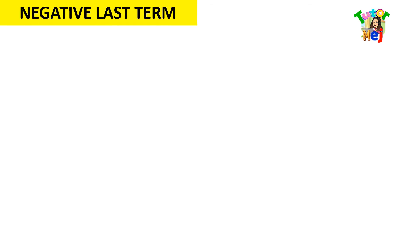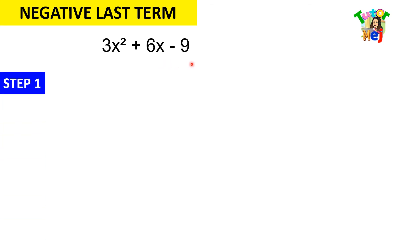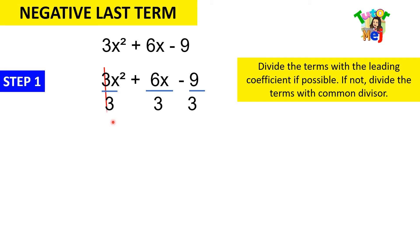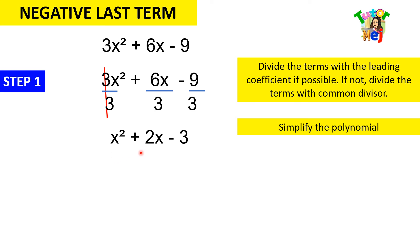Now let's have a square trinomial with a negative last term. For example, we have 3x squared plus 6x minus 9. Step 1: divide the terms with the leading coefficient if possible. If not, divide with the common divisor. All terms can be divided exactly by 3, so our simplified form is x squared plus 2x minus 3.